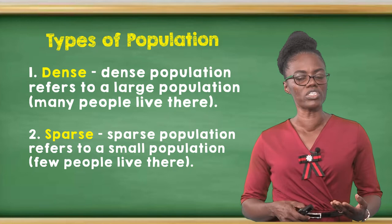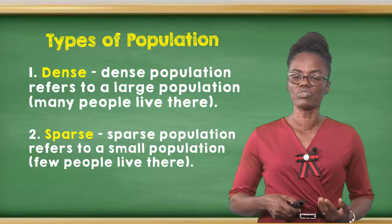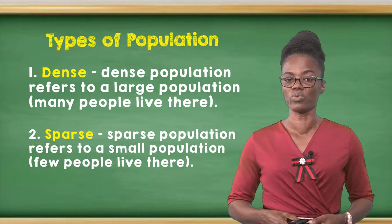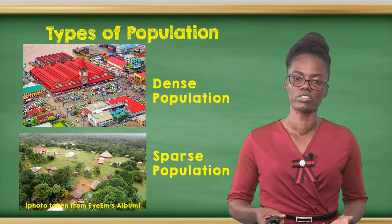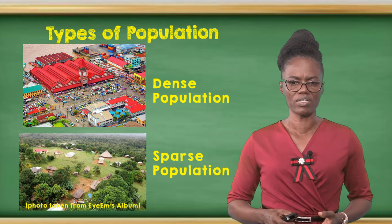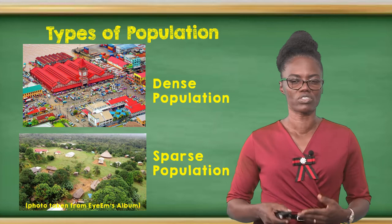Population can either be dense or sparse. Dense simply means a large group of persons — many people living in a particular place. Sparse refers to a population of a small number. In Guyana, the natural regions have either dense population or sparse population. We have images of the two types: dense, where we see a large amount of persons, and sparse, where just a few persons are dwelling.